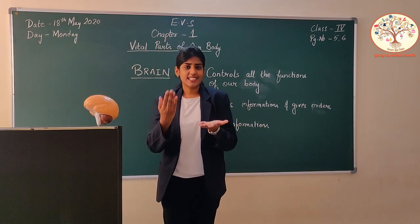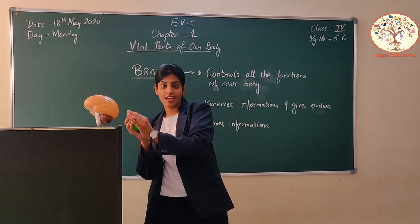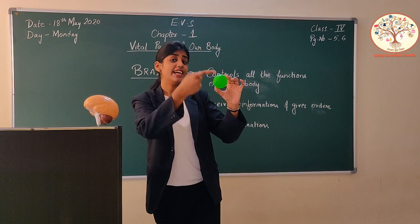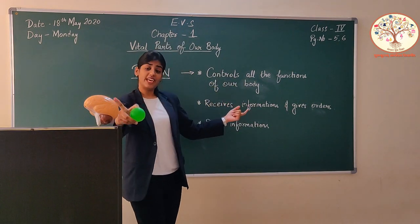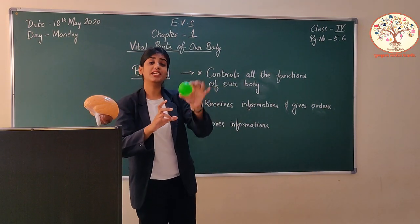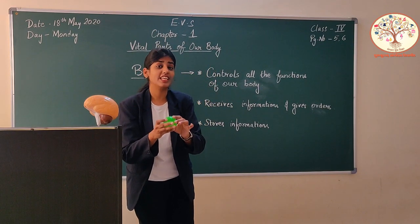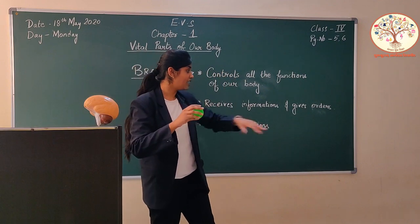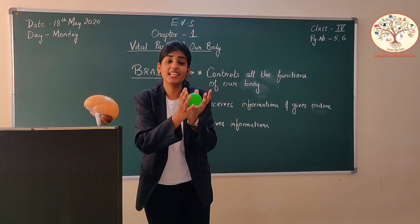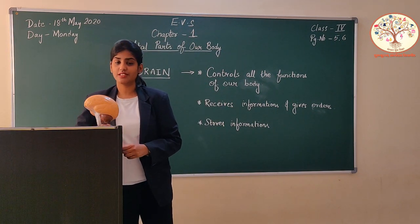Let's test our eye sense. Our eye sees something — the ball. It gave information to the brain. The brain receives the information that a ball is coming. What order did the brain give? Use your hand and catch the ball.